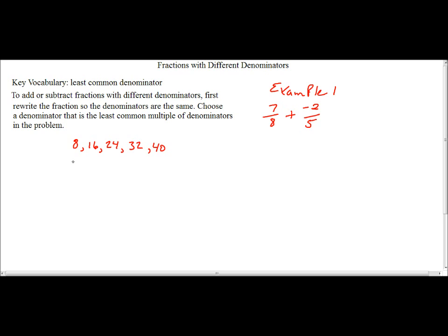Let's take 5. 5 times 1 is 5, times 2 is 10, times 3 is 15, times 4 is 20, times 5 is 25, times 6 is 30, times 7 is 35, and times 8 is 40. So there's my least common multiple, which translates into my least common denominator.